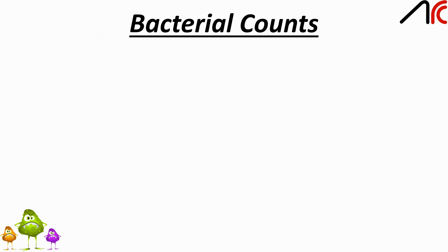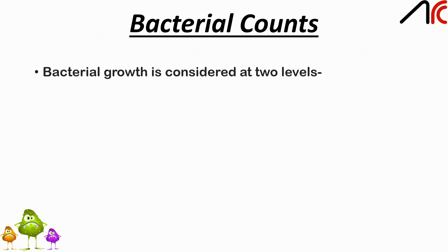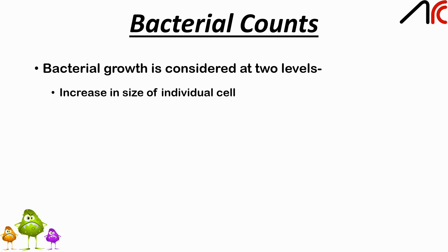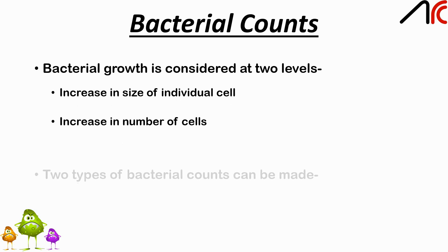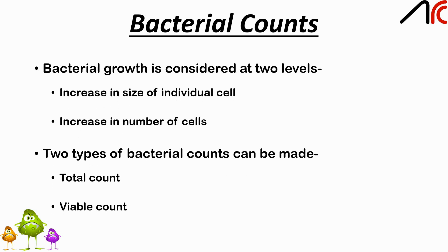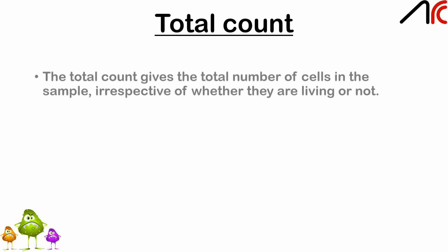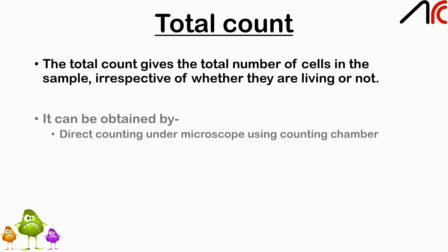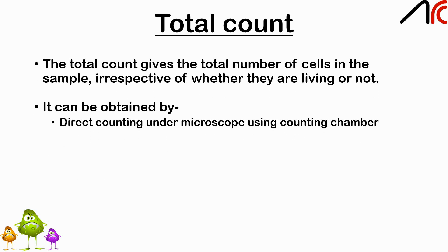Bacterial counts: bacterial growth may be considered at two levels — increase in the size of individual cells, or increase in the number of cells. Two types of bacterial counts can be made: total count and viable count. The total count gives the total number of cells in the sample irrespective of whether they are living or not. It can be obtained by direct counting under the microscope using counting chambers.